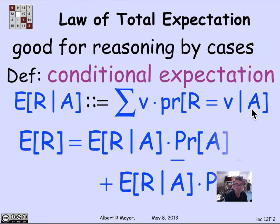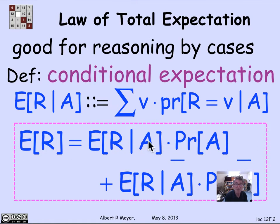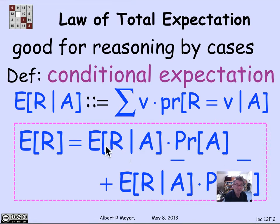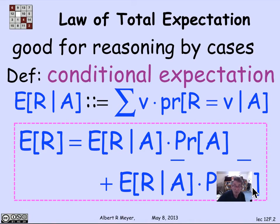With that definition, we can state the basic form of the law of total expectation, which says if you want to calculate the expectation of r, you can split it into cases according to whether or not a occurs. It's simply the conditional expectation of r given a times the probability of a, plus the conditional expectation of r given not a times the probability of not a. So it really looks like the same format as the law of total probability.